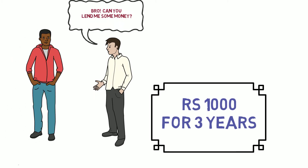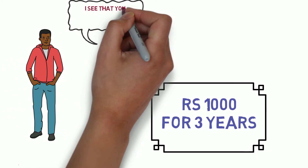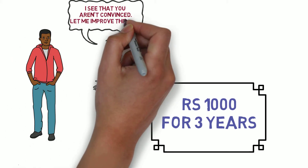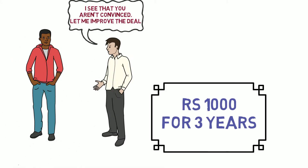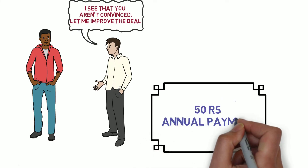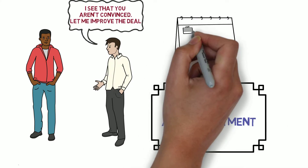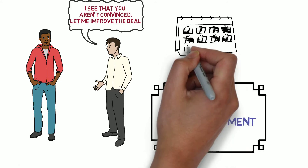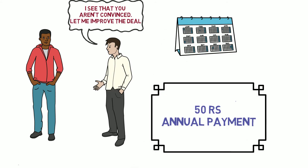Sensing your concerns, your friend suggests that in addition to returning the total loan amount of rupees 1000 after three years, he will also make annual payments known as coupons of rupees 50 to you at the end of each year. Now would you agree to lend him the money after this proposal? Sounds like a good deal, but how do you decide if this is in fact a good deal?